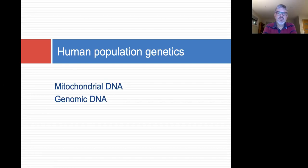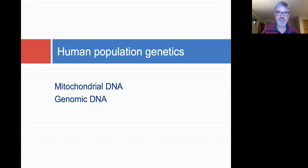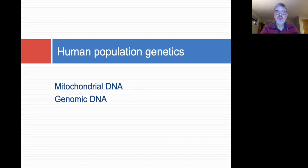I'd like to now turn to population genetics. For those familiar with my book 'Losing a Lost Tribe,' it dealt exclusively with mitochondrial DNA, which is a much less powerful technology for tracing ancestry. However, genomic DNA is far more powerful. I want to introduce you to the work that's been done over the last 10 years on the genomic DNA front.